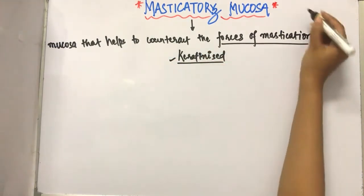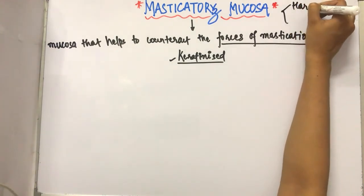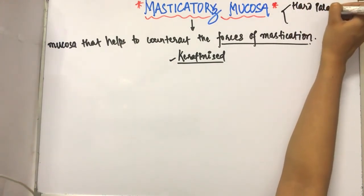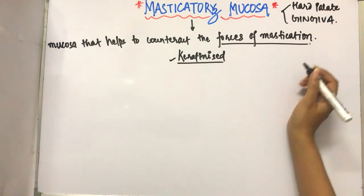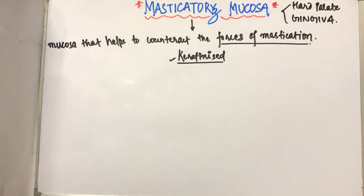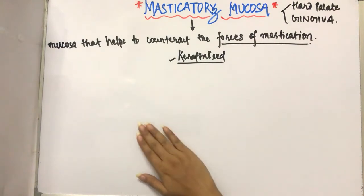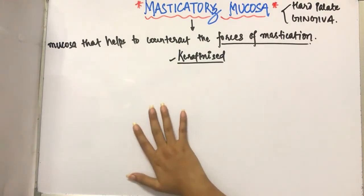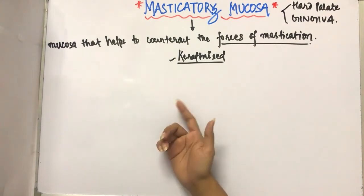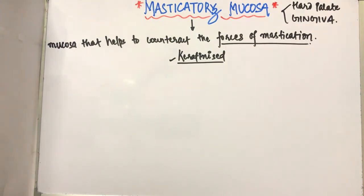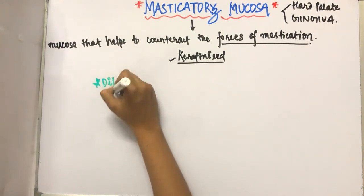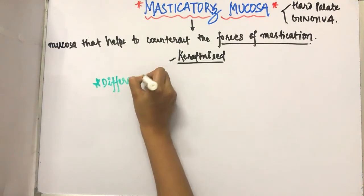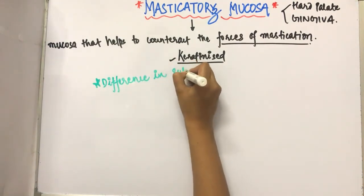Masticatory mucosa is made up of the hard palate and gingiva. It has the same thickness, keratinization of epithelium, same thickness, density, and firmness of the lamina propria. However, there is a difference present in the submucosa.